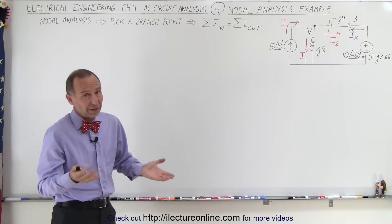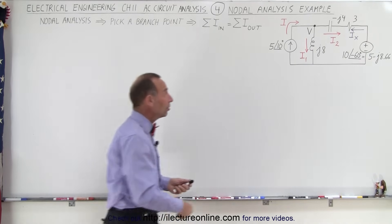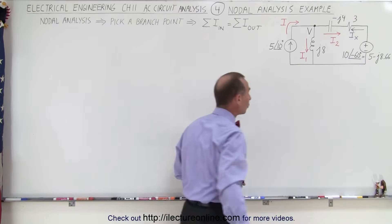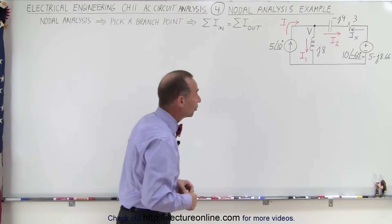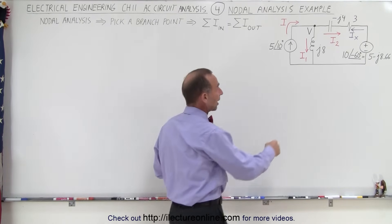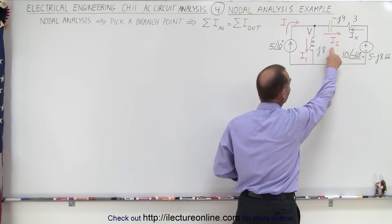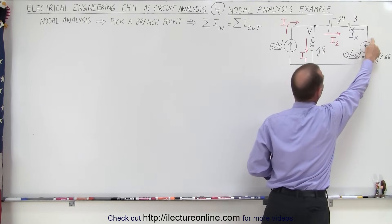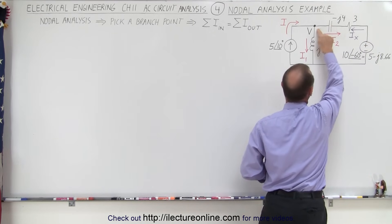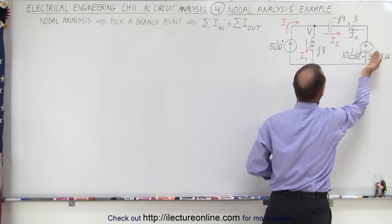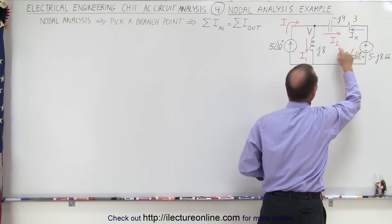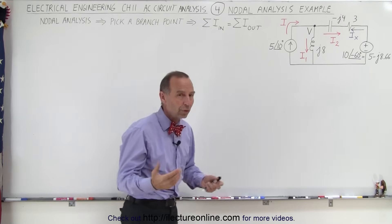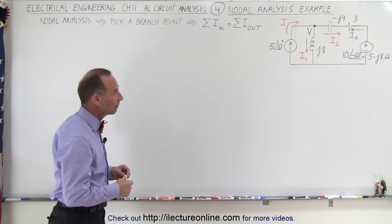This is a relatively simple example, but it does have a current source, a voltage source, and a single node. We're going to figure out what i1 and i2 are equal to. The voltage here is probably higher than the voltage at the node, so the current will probably flow in this direction. We'll solve for i2 and show how to solve for the real current i sub x.